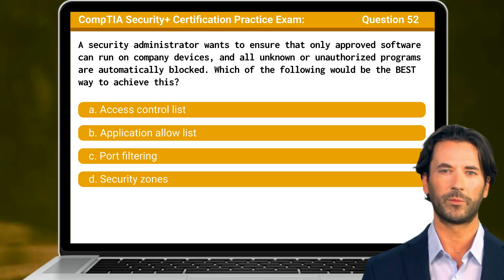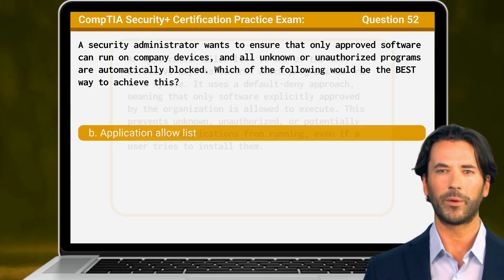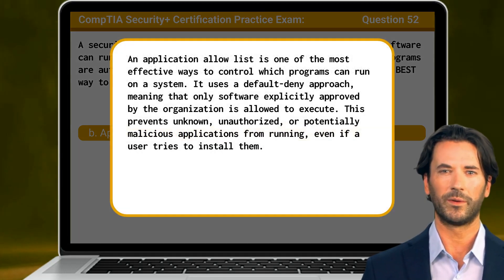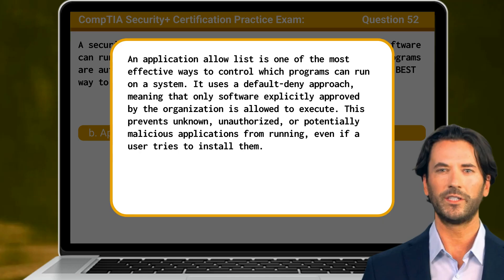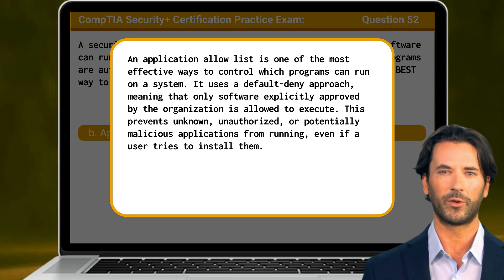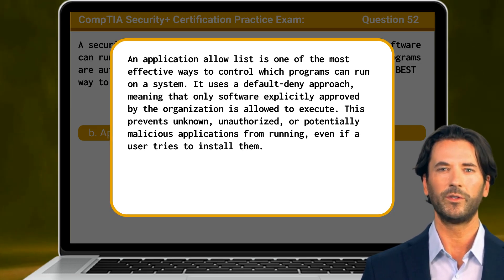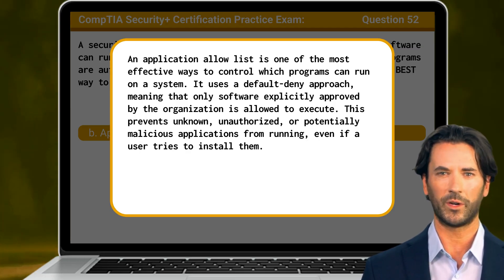The answer is B: Application Allow List. An Application Allow List is one of the most effective ways to control which programs can run on a system. It uses a default-deny approach, meaning that only software explicitly approved by the organization is allowed to execute. This prevents unknown, unauthorized, or potentially malicious applications from running, even if a user tries to install them.